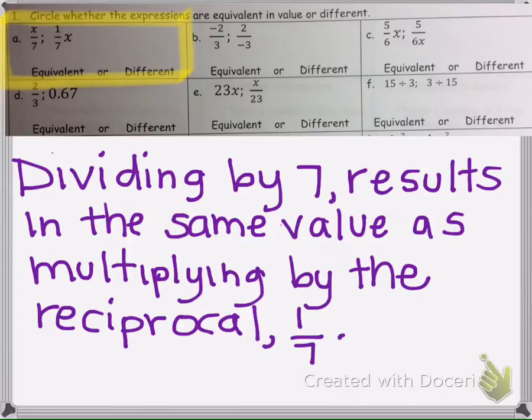In this problem, dividing by 7 is equivalent to multiplying the number by the reciprocal of 7, which is one-seventh. Remember, reciprocal just means if you take a number like 7 and flip it, it's one-seventh. So dividing by 7 is the same thing as multiplying by one-seventh, therefore they are equivalent.